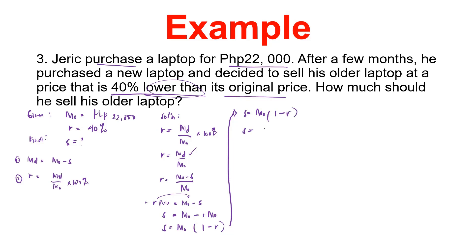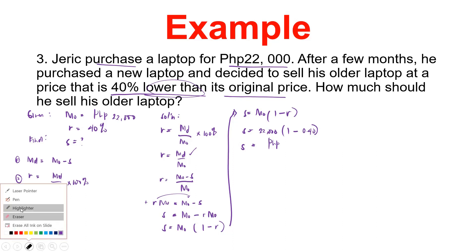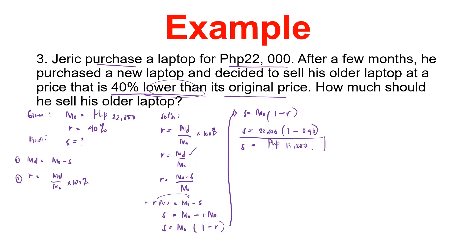Using the derived formula: selling price equals cost price times (1 minus r). Our cost price is 22,000 times (1 minus 0.40). Input that on your calculator and you will get a selling price of 13,200.